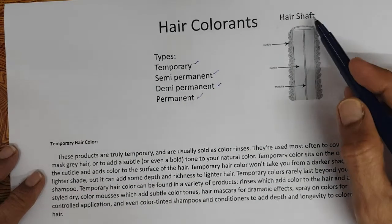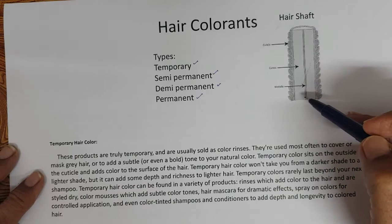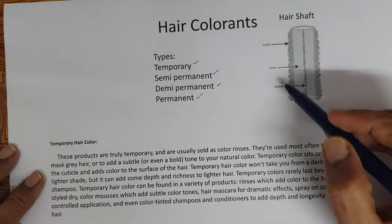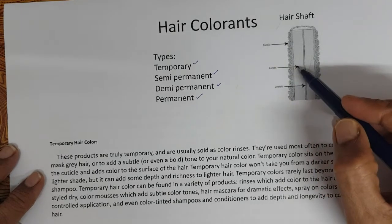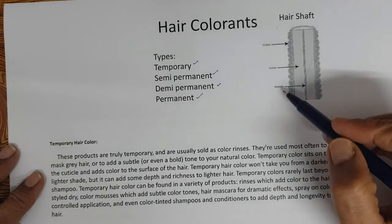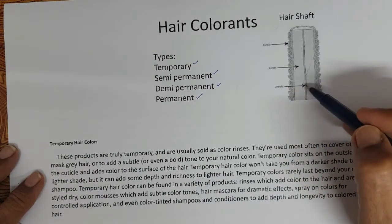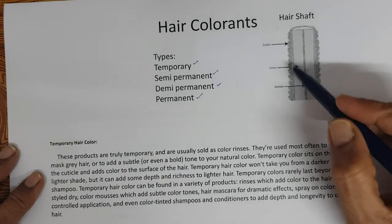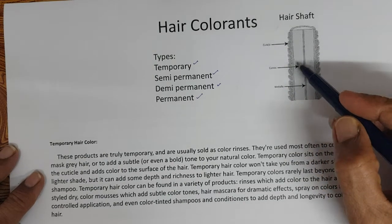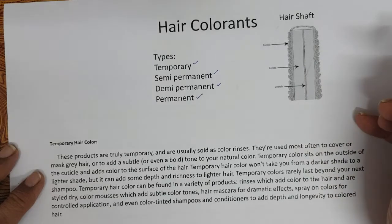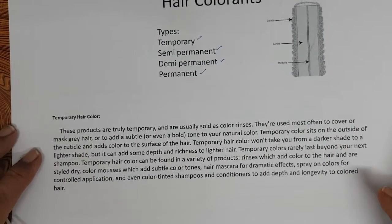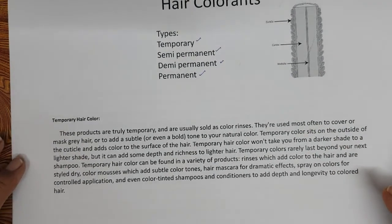If you look at the hair shaft, the outer layer is the cuticle, the middle layer is the cortex, and then the medulla. For hair colors, the cuticle and cortex are very, very important. We will see how.